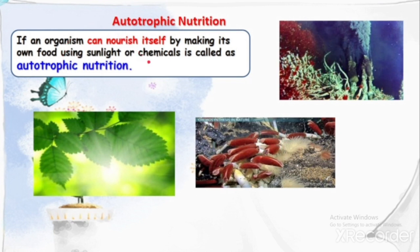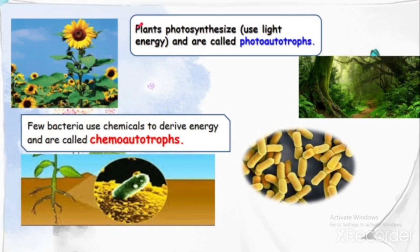In autotrophic nutrition, an organism nourishes itself by making its own food using sunlight or chemicals. Plants that use light energy are called phototrophs. Few bacteria use chemicals to derive energy and are called chemotrophs — for example, Rhizobium.